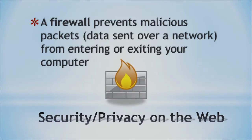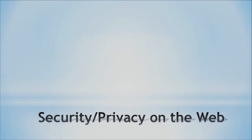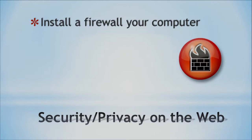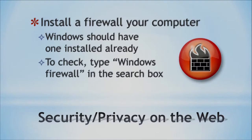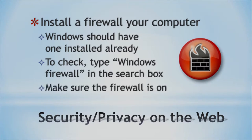We have the firewall, which prevents malicious packets. Packets are data sent over the network from entering or exiting your computer. With Windows, you actually have one built in — it's the Windows Firewall. Just type that in the search box and make sure it's on. That will help a lot. It's built into Windows, so you don't have to buy anything — just go into the search bar and look for it. It helps with the networks.